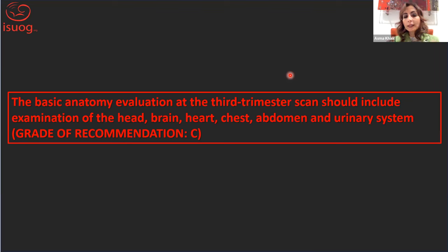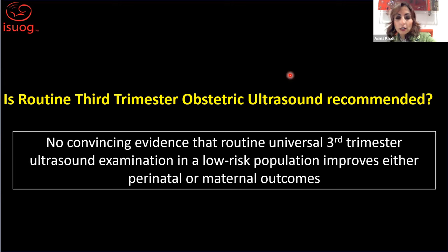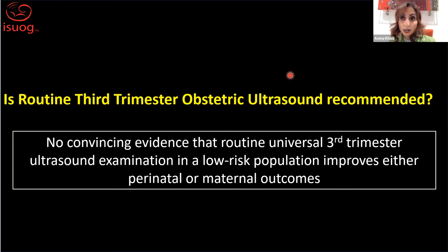We recommend that basic anatomy evaluation in the third trimester should include examination of the head, brain, heart, chest, abdomen, and urinary system. As for whether routine third trimester obstetric ultrasound is universally recommended — the answer is no. The evidence is controversial, and at the moment there is no convincing evidence that universal third trimester ultrasound in a low-risk population improves perinatal or maternal outcomes. This guideline is not about recommending or not recommending routine universal scanning, but rather about what the checklist should include if a third trimester scan is performed. Thank you very much.